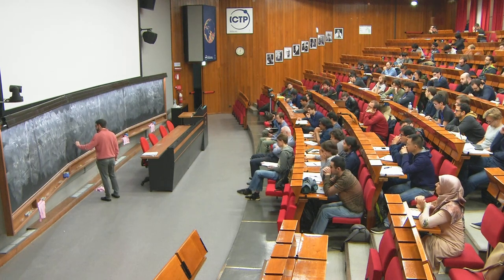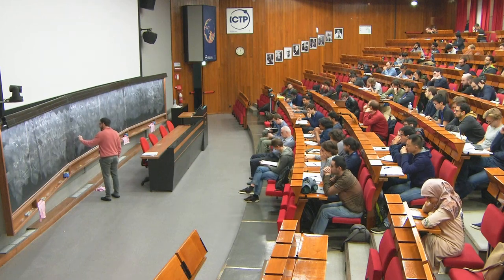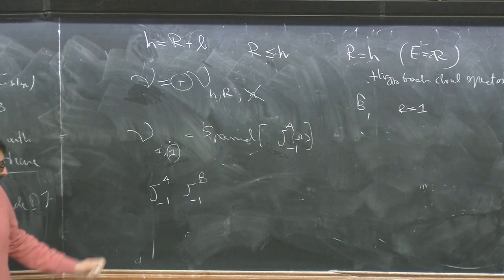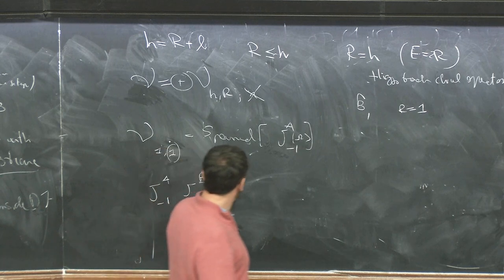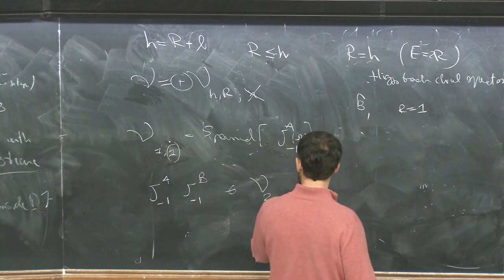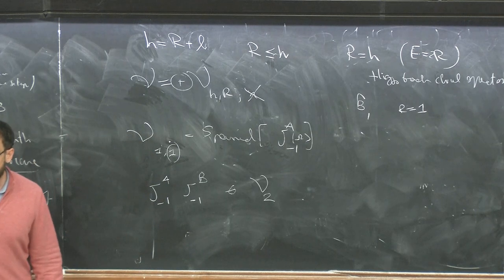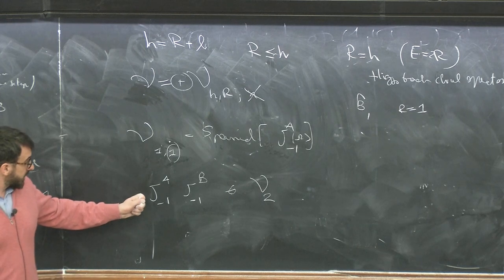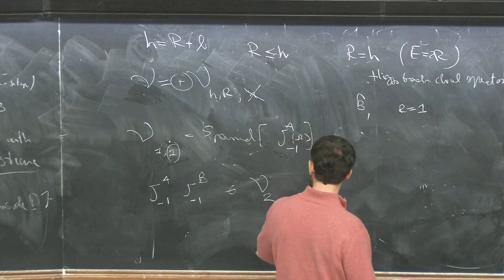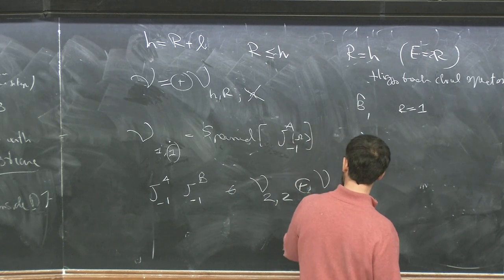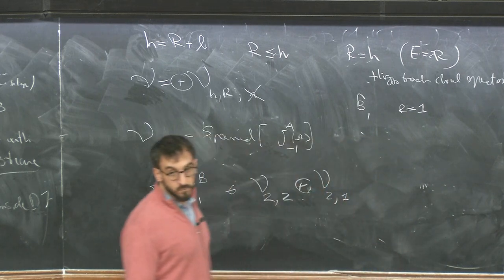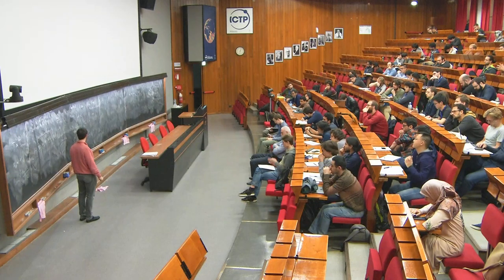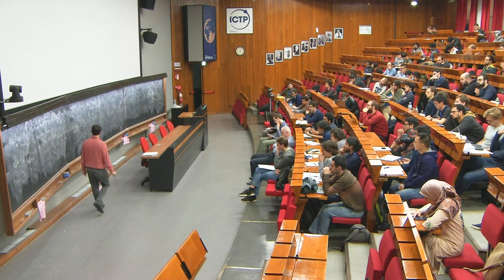Now let me look at J_{-1}^a J_{-1}^b. The h assignment is clearly 2, but the r assignment is trickier — a priori it can be 2 or it can be 1. It cannot be zero because that is not a thing that exists in four dimensions.